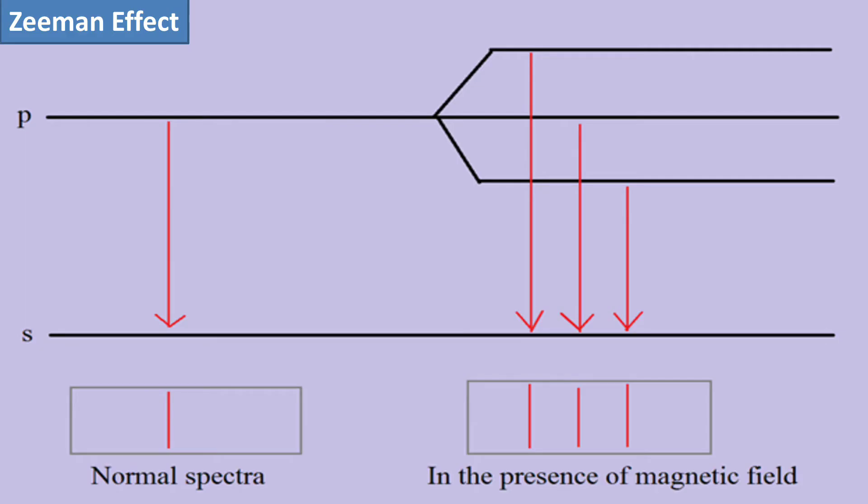This is the representation of the Zeeman effect for the hydrogen atom. An atomic spectrum is the spectrum of frequencies of electromagnetic radiation emitted or absorbed during transitions of electrons between energy levels within an atom. Emissions lead to emission spectra and absorption leads to absorption spectra. This spectrum is a characteristic property of elements and is composed of a collection of spectral lines, each representing the energy difference between two energy levels of the atom.